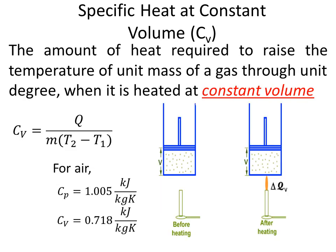Specific heat at constant volume, Cv, is the amount of heat required to raise the temperature of unit mass of a gas through one degree when heated at constant volume. It is given by: Cv = Q / (m × (T2 − T1)). For air, Cp is 1.005 kJ/kg·K and Cv is 0.718 kJ/kg·K.